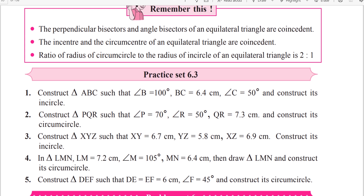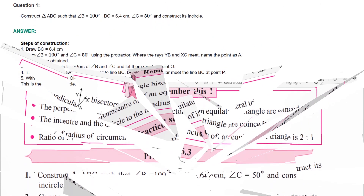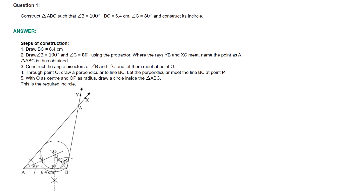Now coming to Practice Set 6.3, Question number 1. Construct triangle ABC such that measure of angle B is equal to 100 degrees, BC is equal to 6.4 cm, measure of angle C is equal to 50 degrees, and construct its incircle. Draw the rough figure — I have not shown it, you have to draw it yourself.